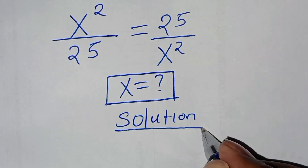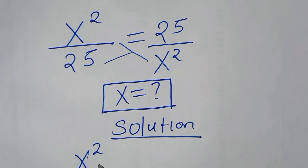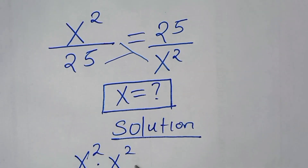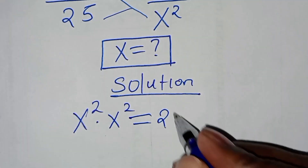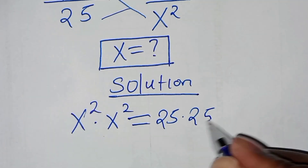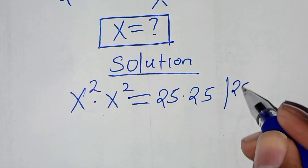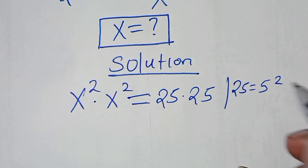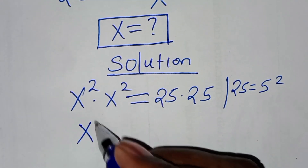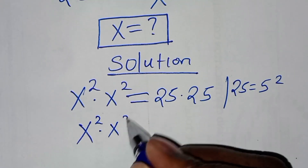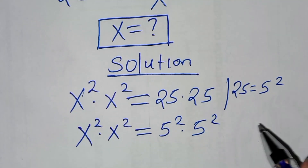We cross multiply here, so that we'll have x to power 2 times x to power 2, this is equal to 25 times 25. From here, we can express 25 as 5 to power 2. So this is the same thing as x to power 2 times x to power 2, equal to 5 to power 2 times 5 to power 2.